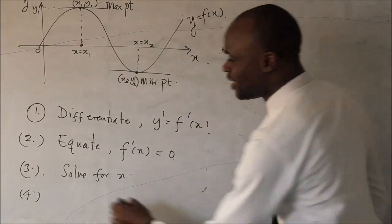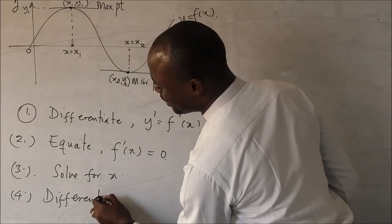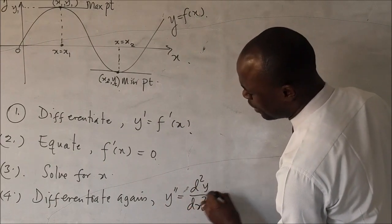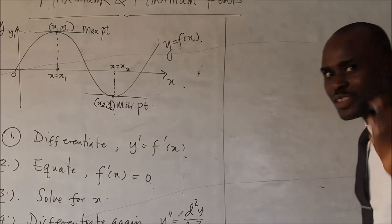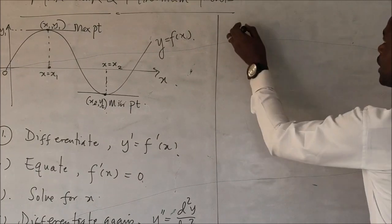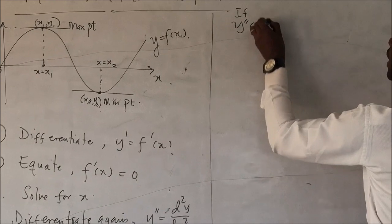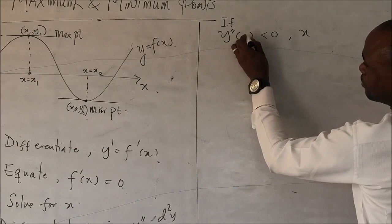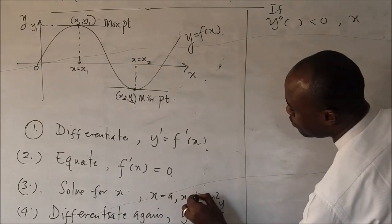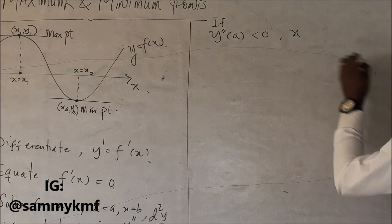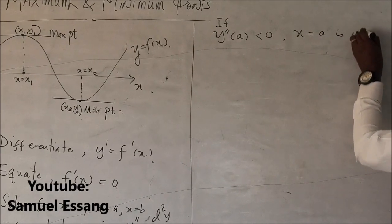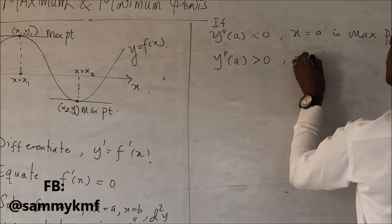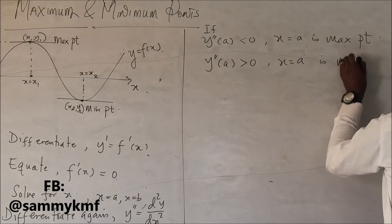The fourth point is to differentiate again. And that is to find y prime prime, which is d squared y dx squared again. Then, the interesting part is now for you to check. If y prime prime of x is less than zero, let's say x equals to a, then we say that x equals to a is maximum point. And if this is greater than zero, we say that x equals to a is minimum point.